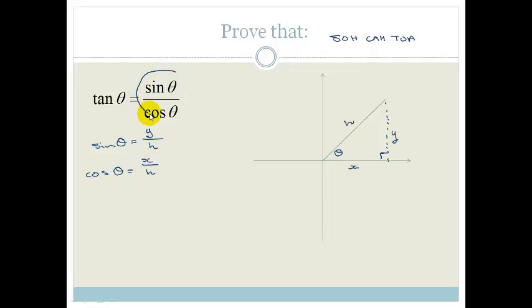So if I look at this right hand side, sin theta divided by cos theta is equal to y over h divided by x over h. But what do we do when we divide by fractions? We tip and times, which becomes y over h times by h over x, which means that these cancel and we end up with y over x.